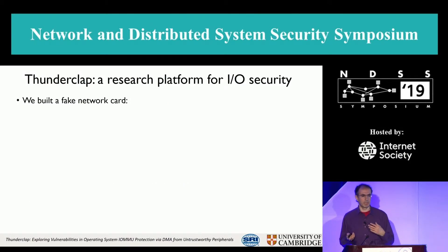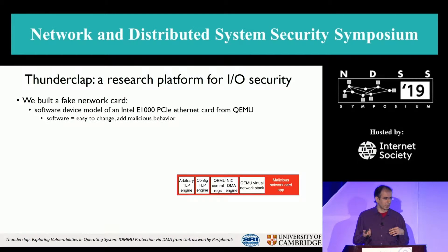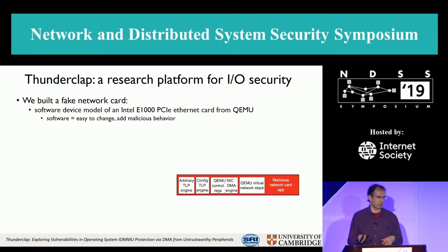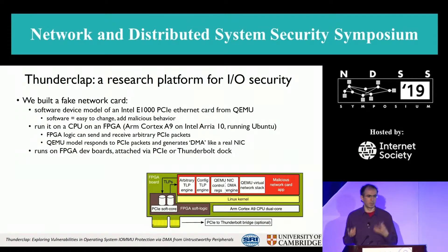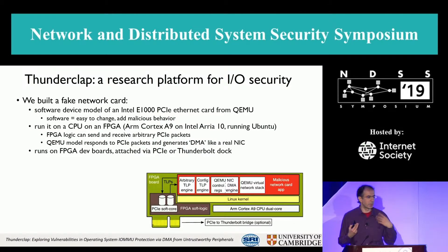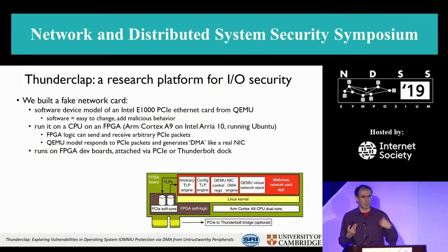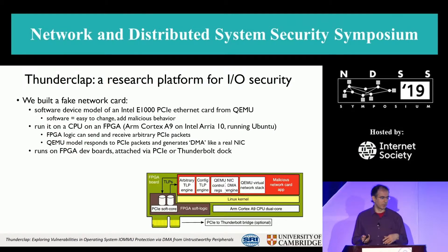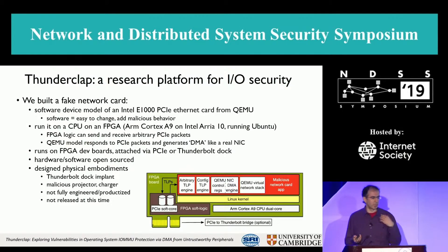We didn't have a real device to play with, so we built a fake network card. We took QEMU's device model of an Intel network card and, since it's software, we added malicious behavior to this software model. We needed hardware to run it in a real system, so we run it on a CPU on an FPGA. We can send and receive PCI Express packets from our fake network card to the system, translating those PCI Express packets into the memory accesses that QEMU uses, so the fake network card can make real DMA transactions. That runs on an FPGA board in a Thunderbolt dock, and we've open-sourced that platform.